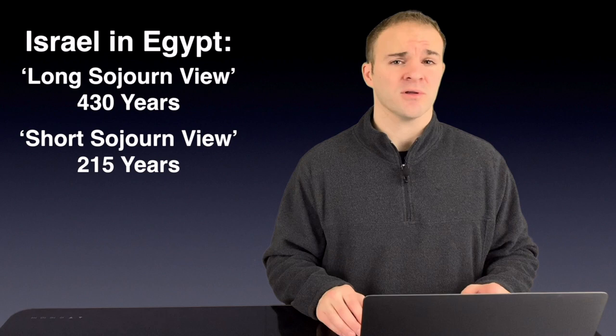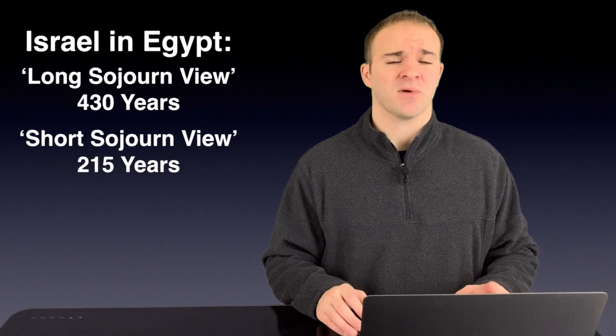The sojourning of Israel in Egypt is a hotly debated topic. There's two views, one of which says we should just stick with the traditional 430 years as described in Exodus 12:40, and then there's one that says no, we need to shorten up that span to 215 years.